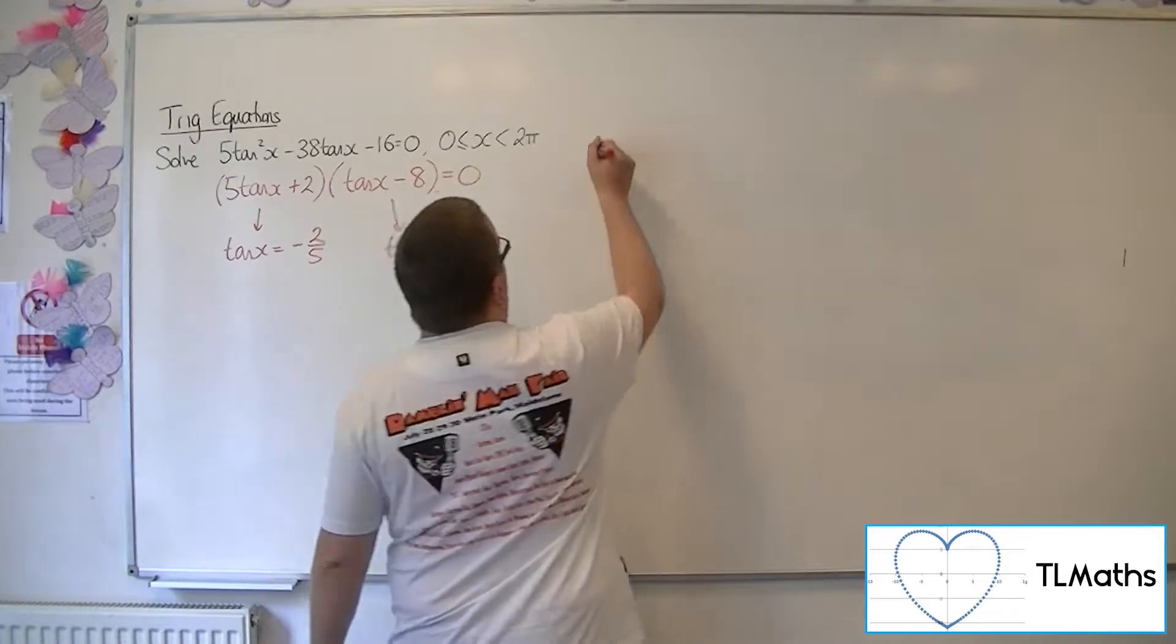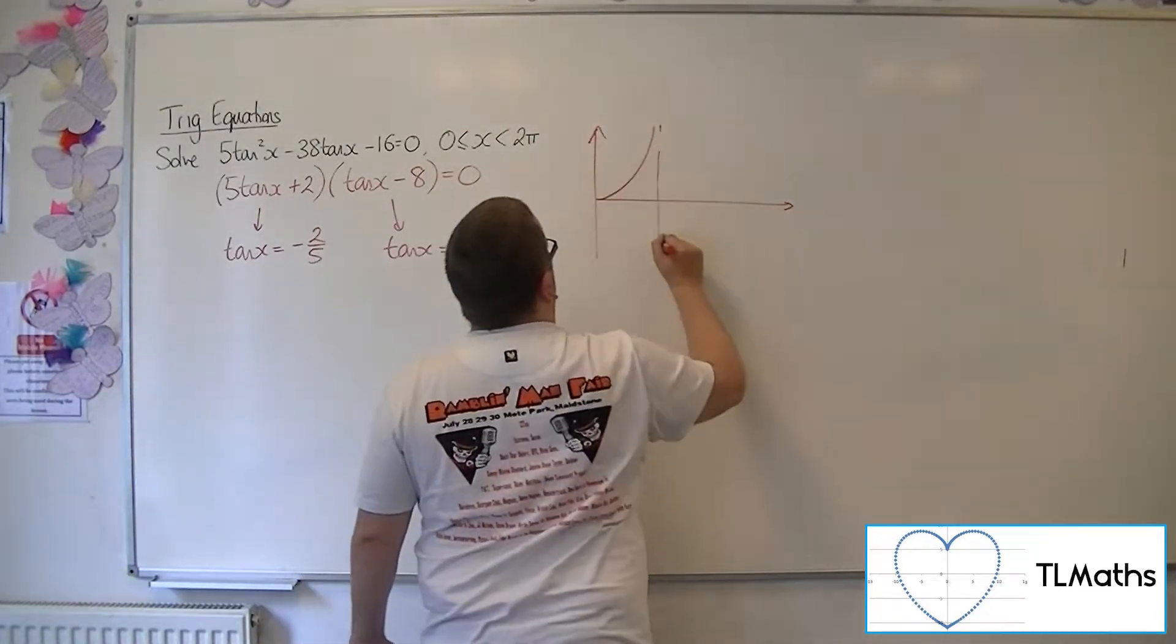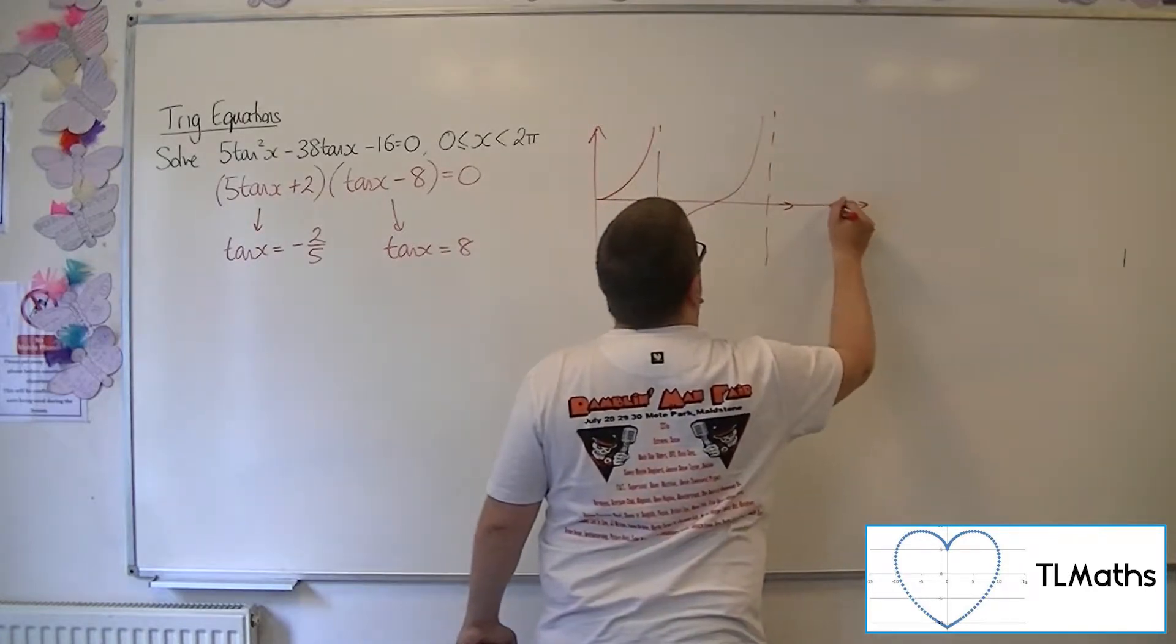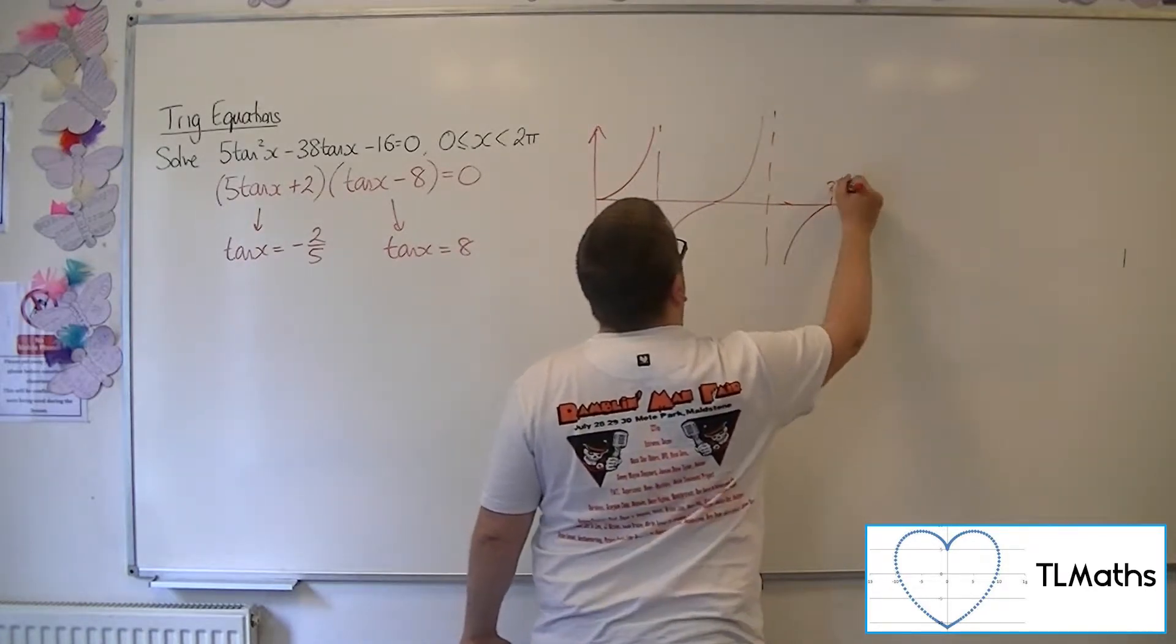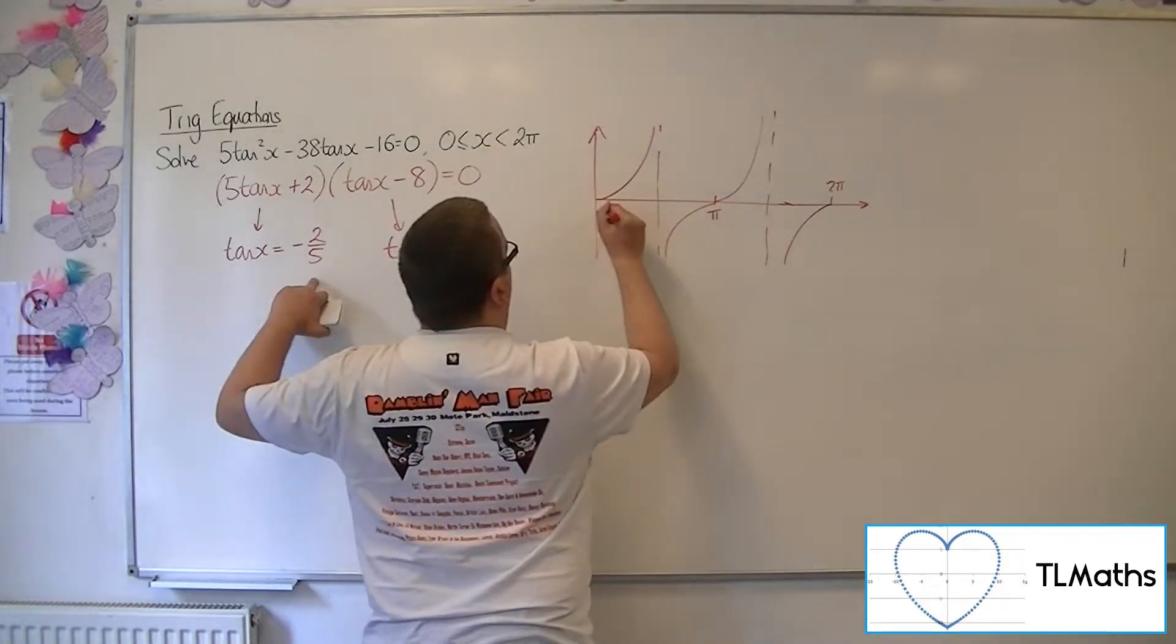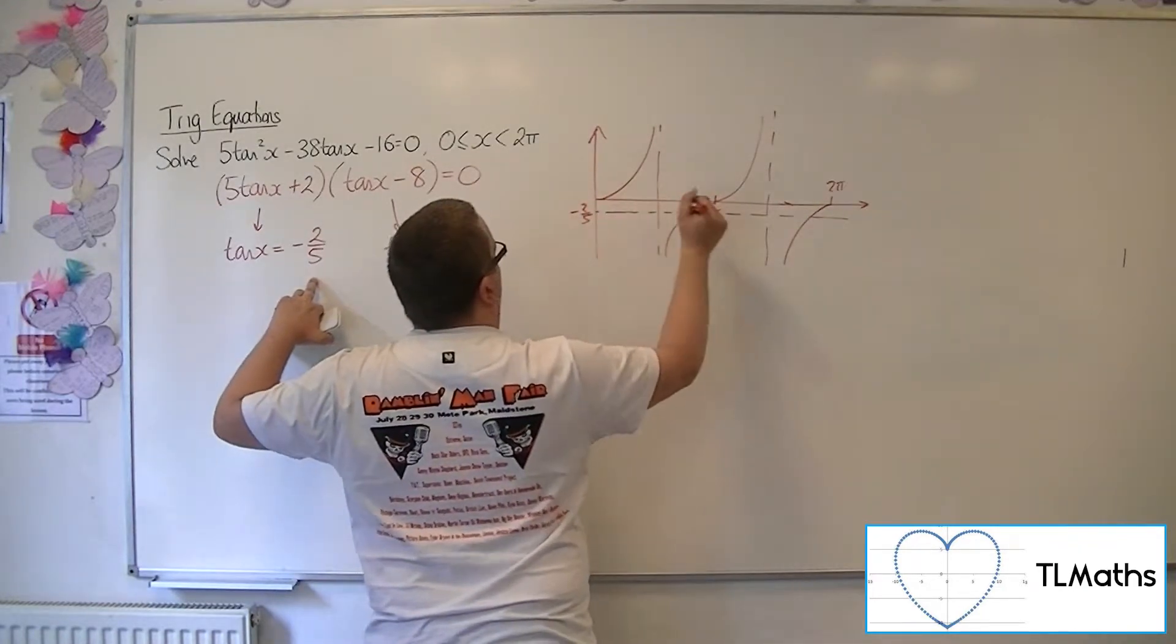So let's sketch tan. Okay, so that's 0 to 2 pi. Now minus 2 fifths, okay, so we're getting two solutions here.